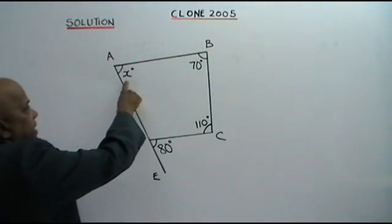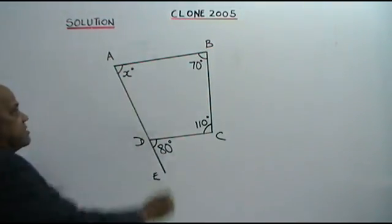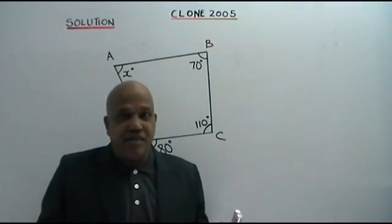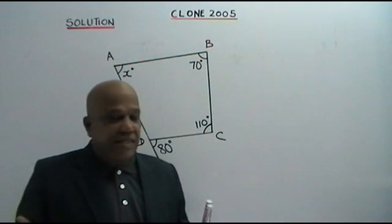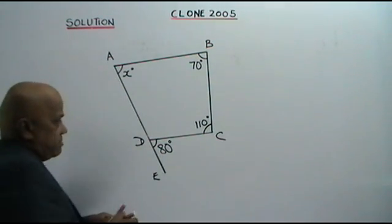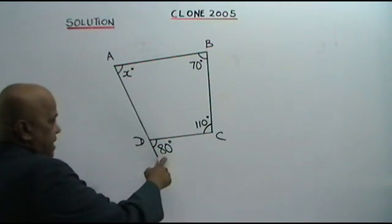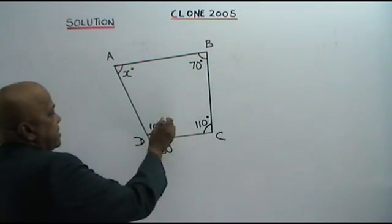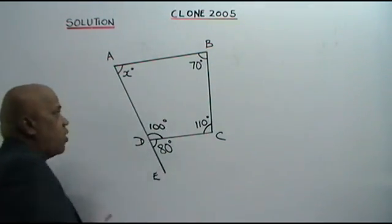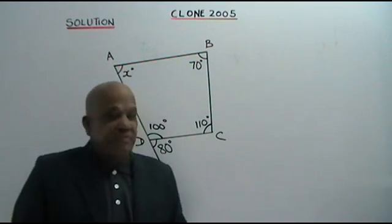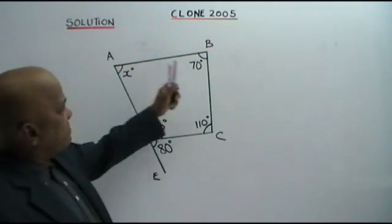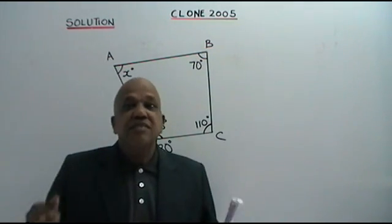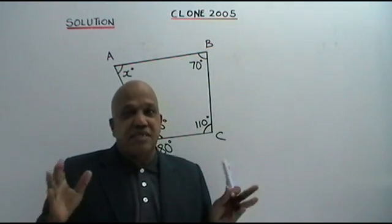You are asked to find the value of X. ABCD is a quadrilateral. Now, if this angle is 80 degrees, this angle is 100 degrees — straight line, 180. These four angles, when you add them up, you must get 360 degrees.